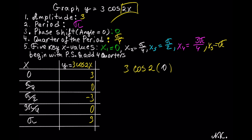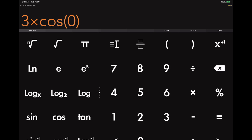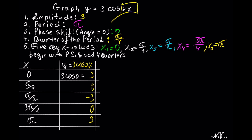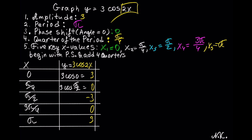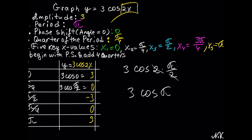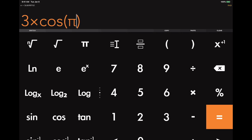When x is 0: 3 cosine of 2×0 equals 3 cosine of 0, which equals 3. When x is π/4: 3 cosine of 2×(π/4) — the 2 and 4 reduce, giving 3 cosine of π/2, and 3 times cosine of π/2 equals 0. When x is π/2: the 2s cancel giving 3 cosine of π, and 3 times cosine of π equals −3.